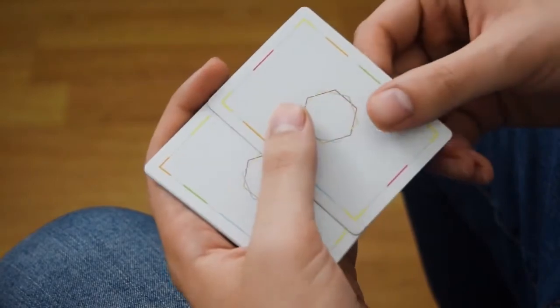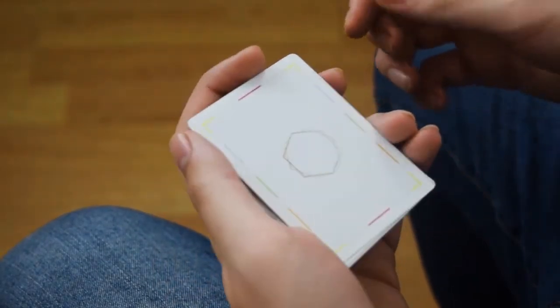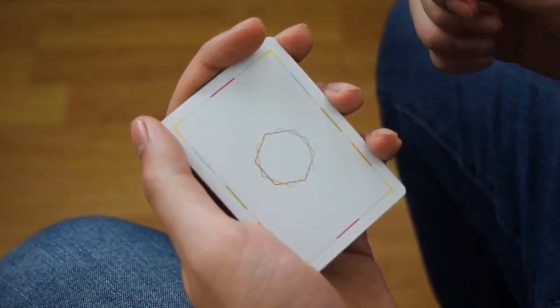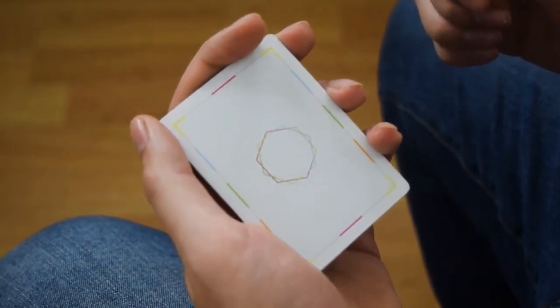If you were to take each card and rotate it end for end and shuffle it back in the deck, it actually creates another back design, giving you ten different back designs in one deck.